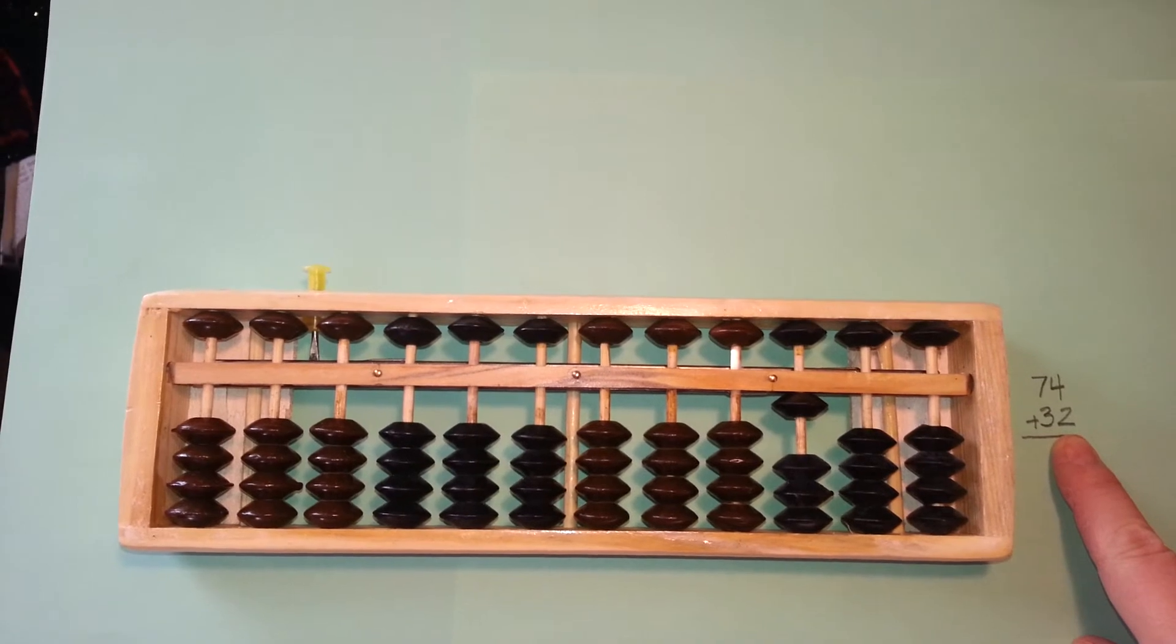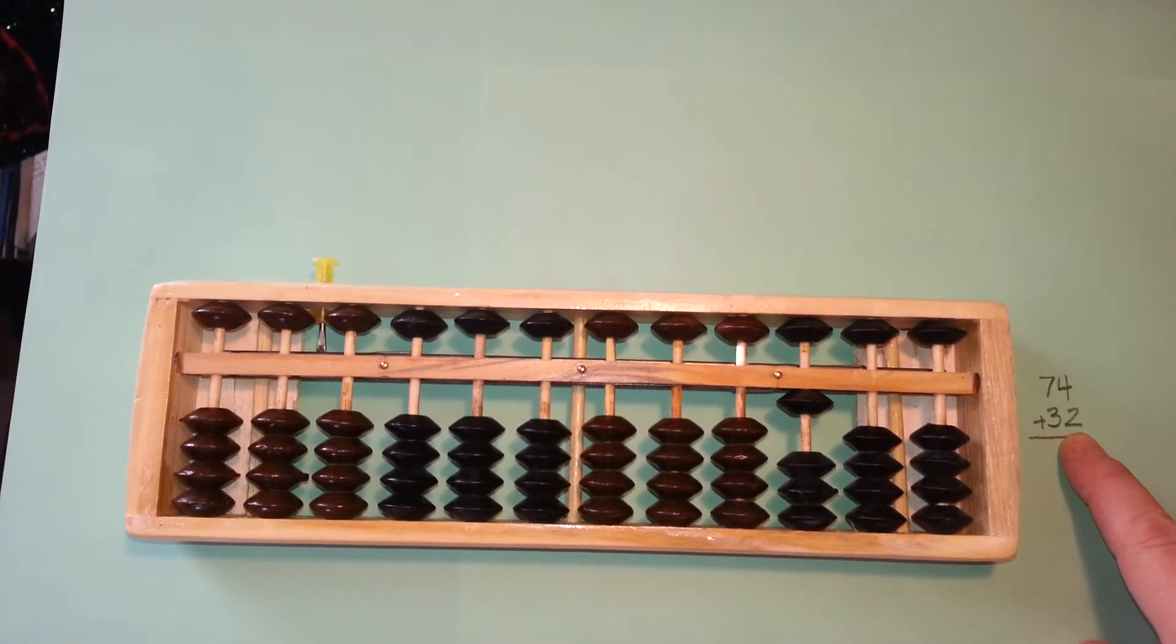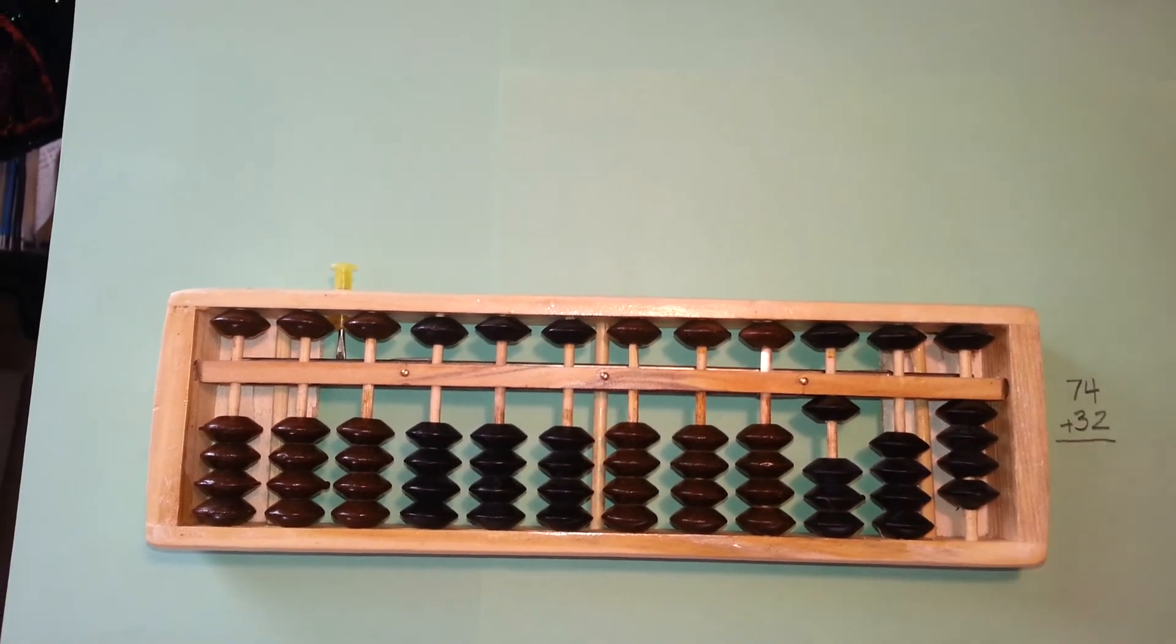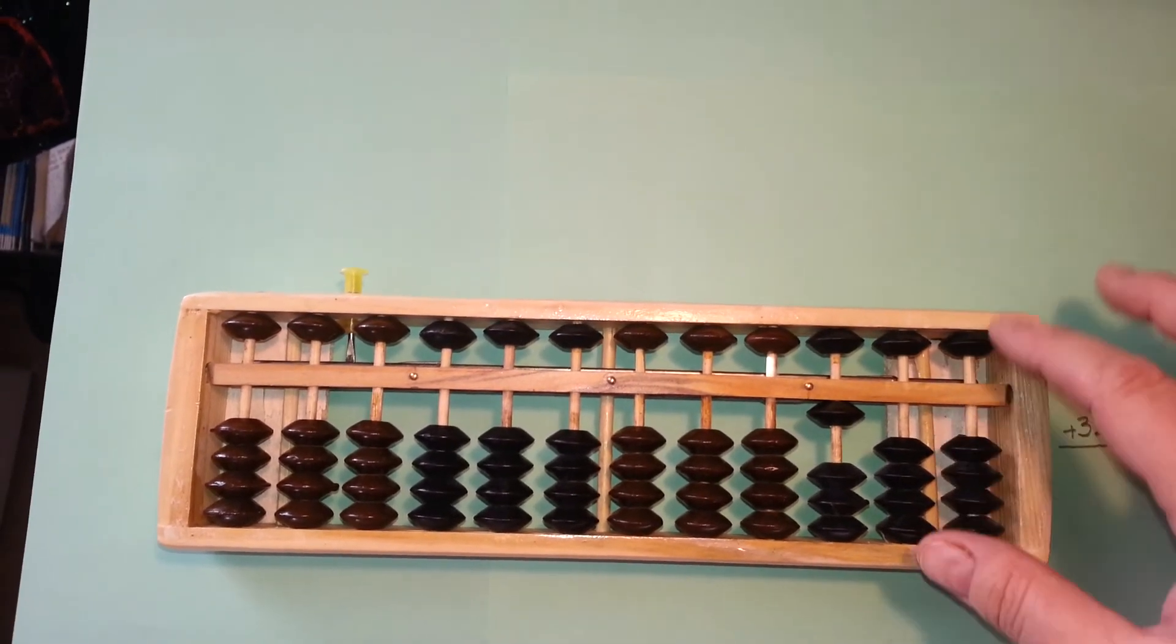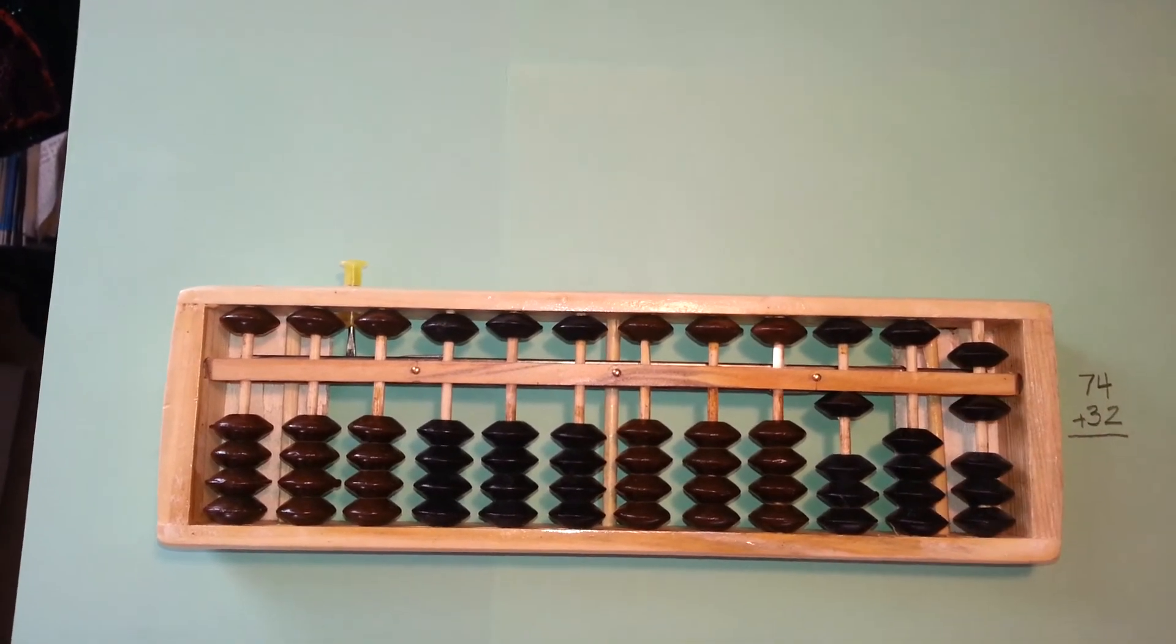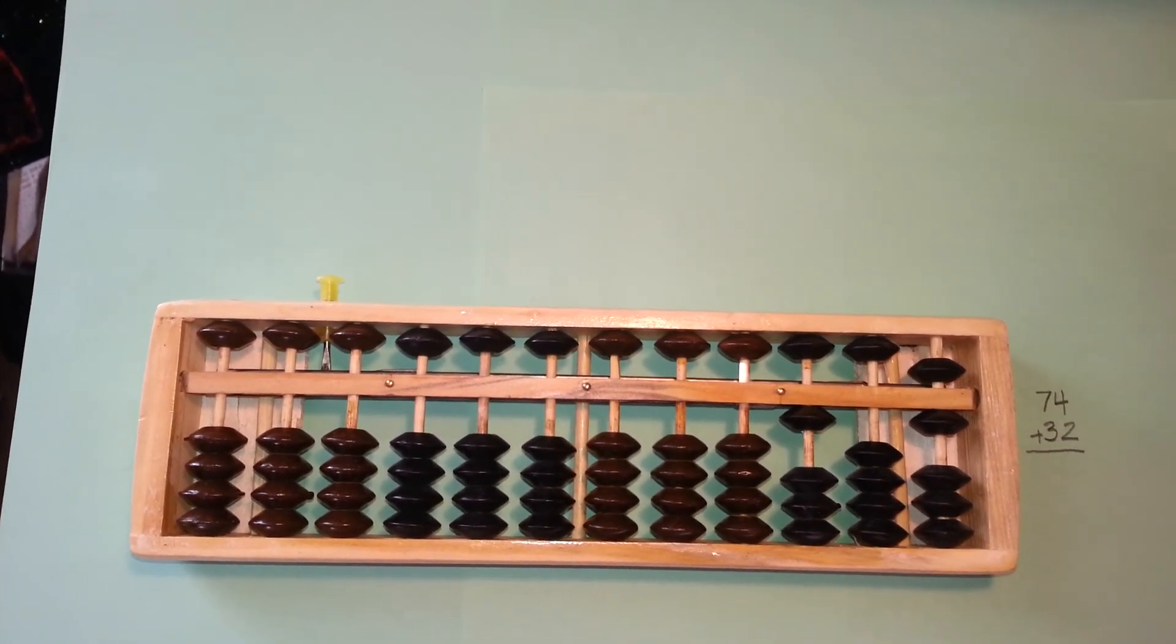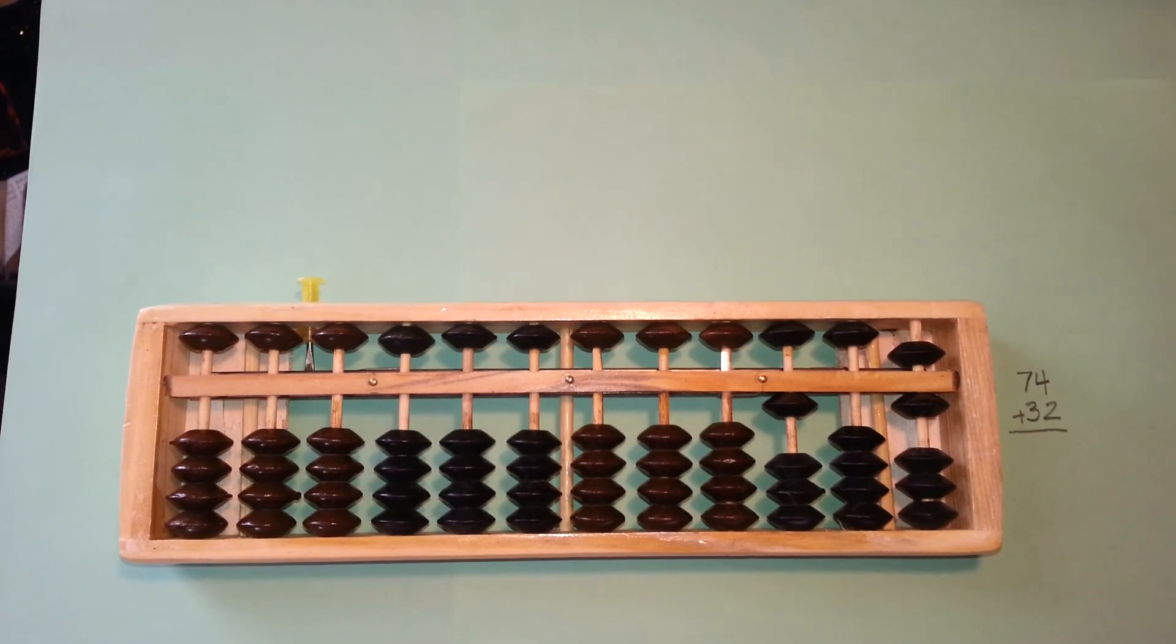Next, we move to the ones place, and we simply add the four ones and the two ones. There's our four. One, two more. Now our answer reads 106.